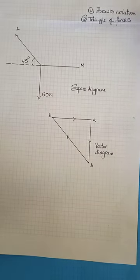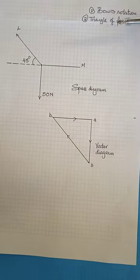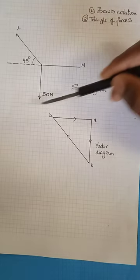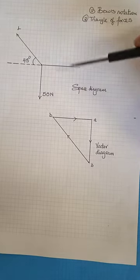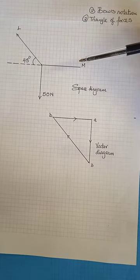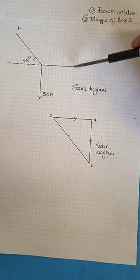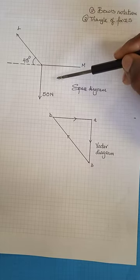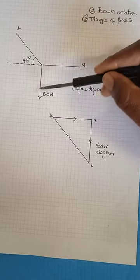We follow a certain rule when we are doing this lettering. You move in a clockwise direction, starting at an open space after the last unknown. In this case this is M, after the last unknown force and before the first known force.